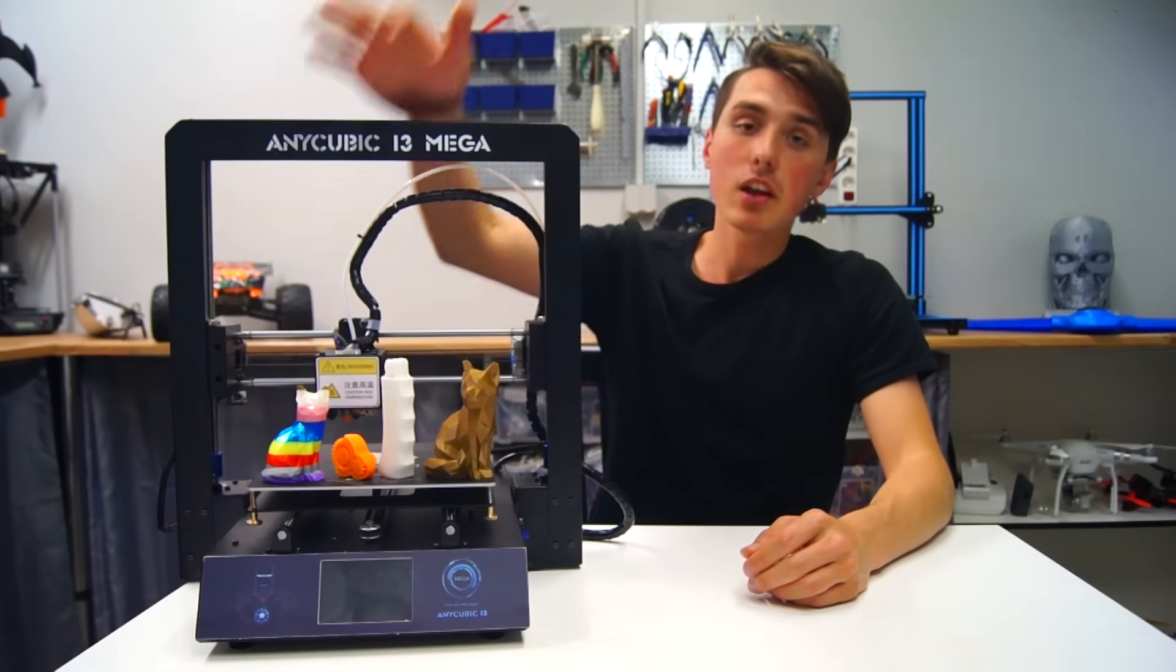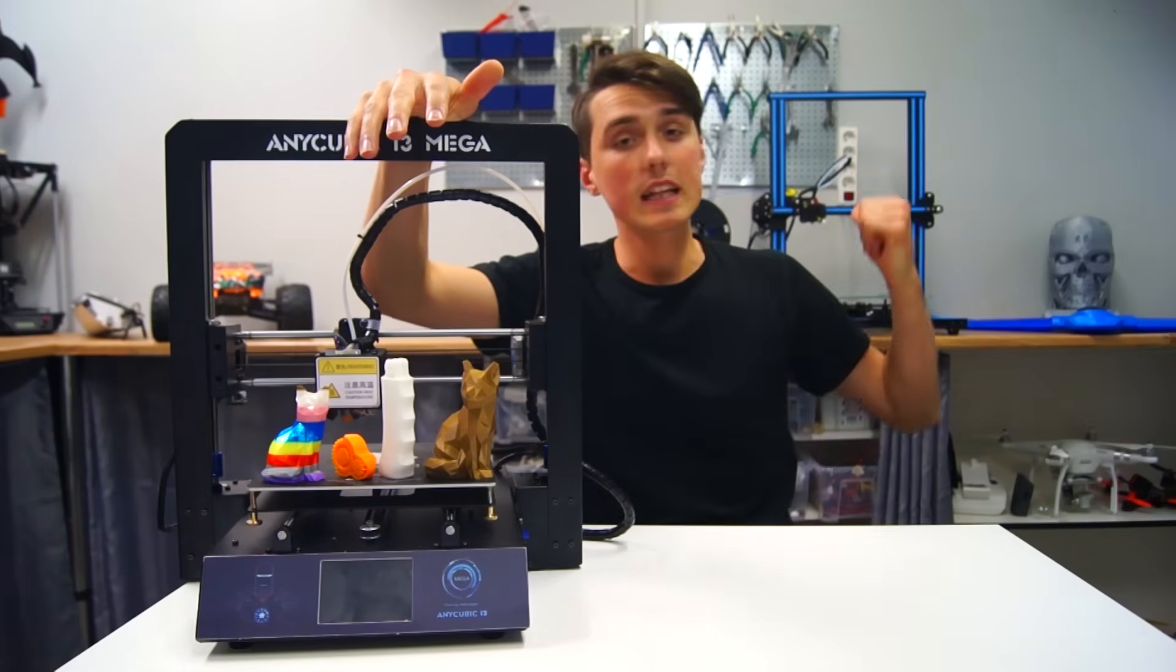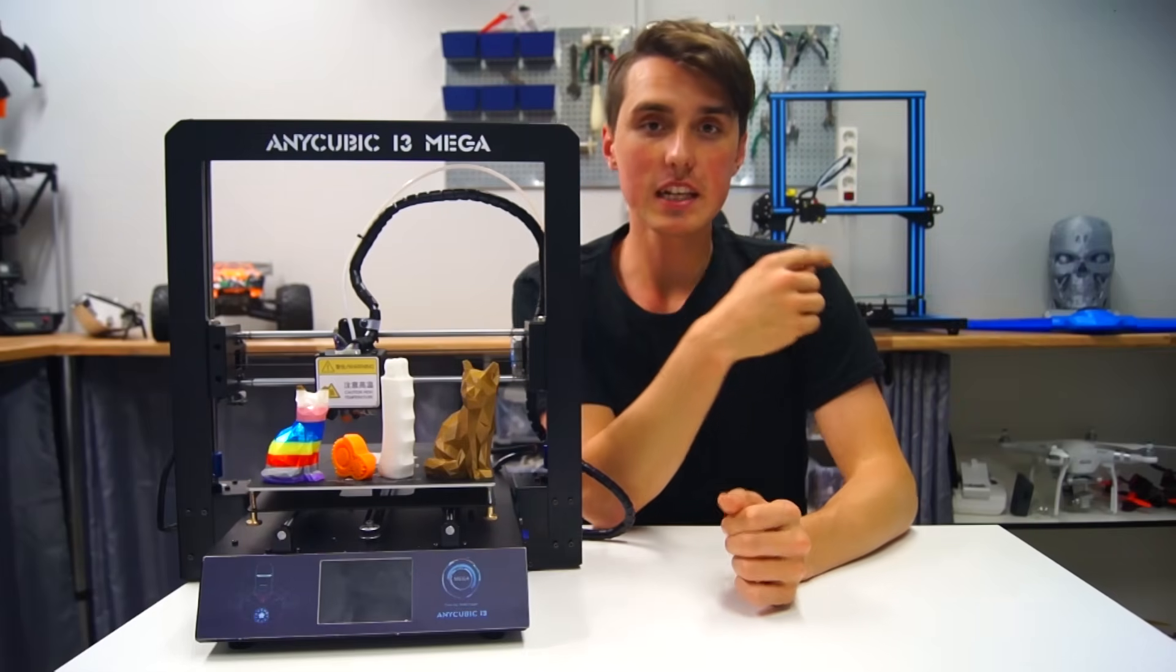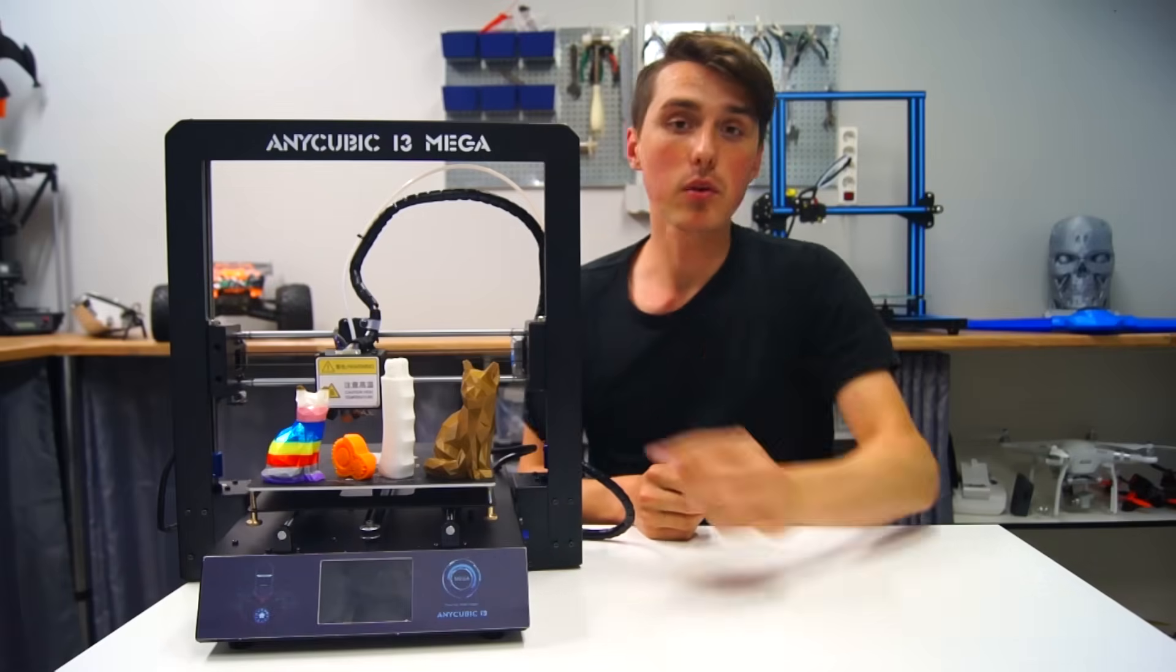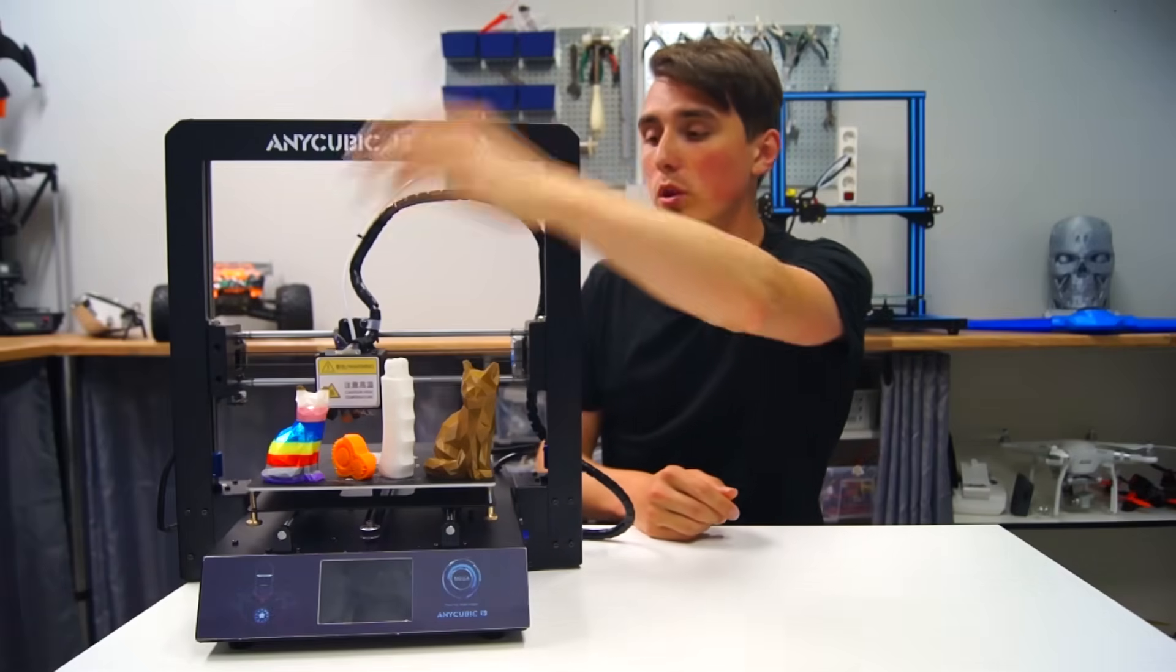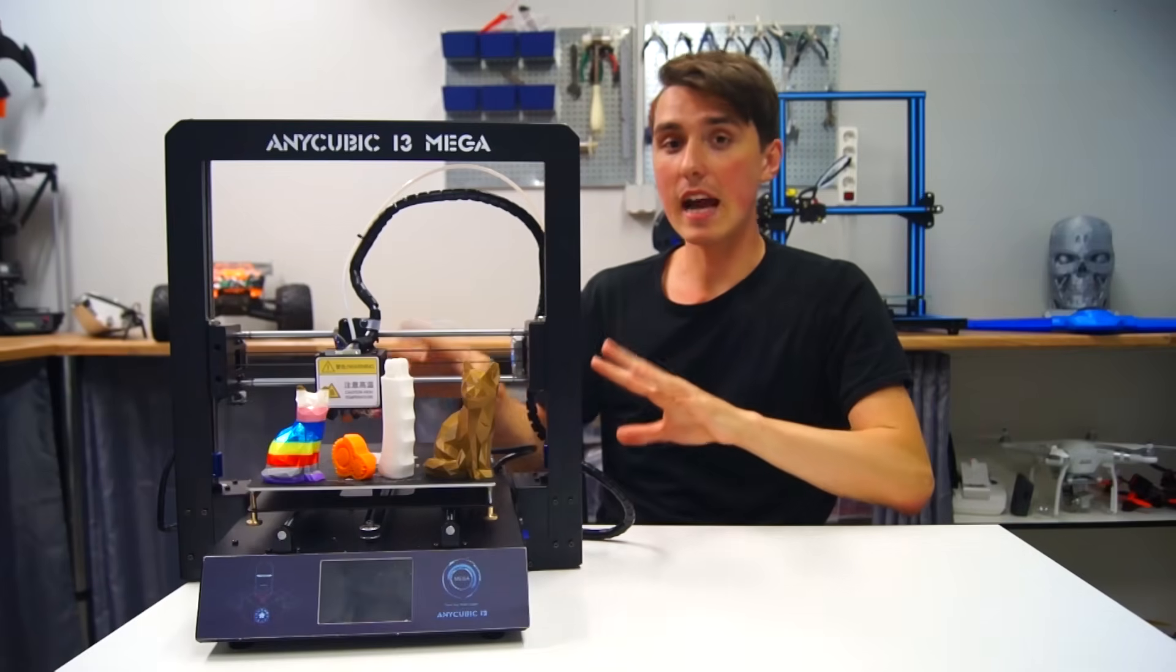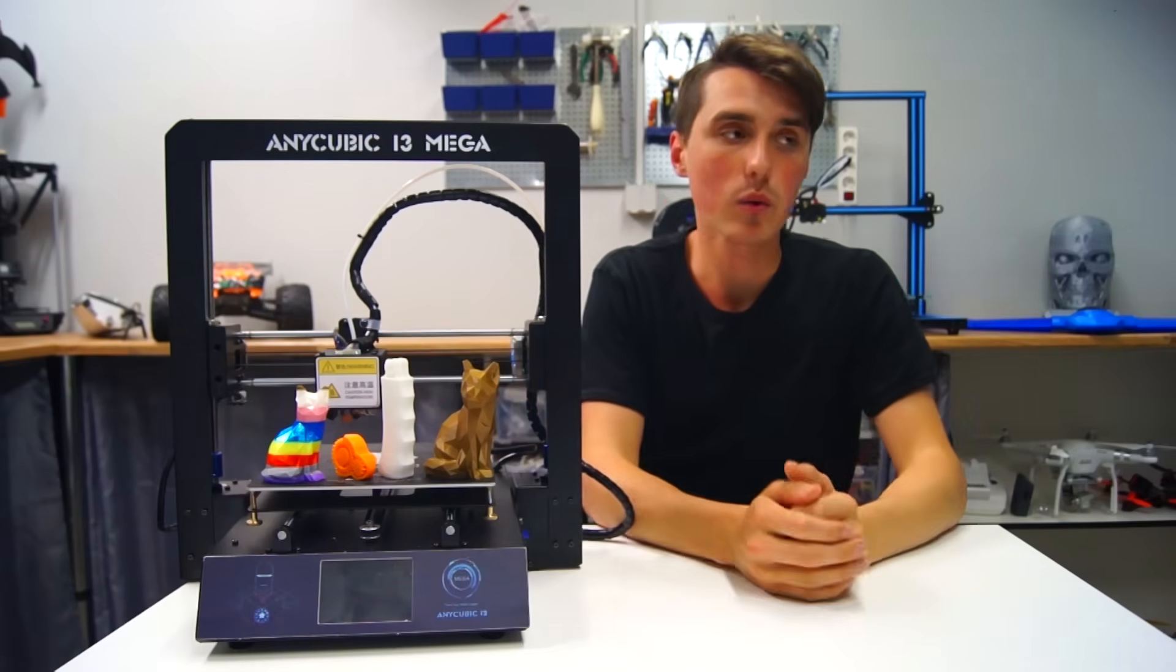So which one do I prefer, the Anycubic i3 Mega or the Creality CR-10? Well, I would have to give a slight edge to the Creality CR-10, but I did get a lot better ABS prints with the Anycubic. Multicolor prints are way easier to make. It does have two Z-axis motors, for whatever that's worth.